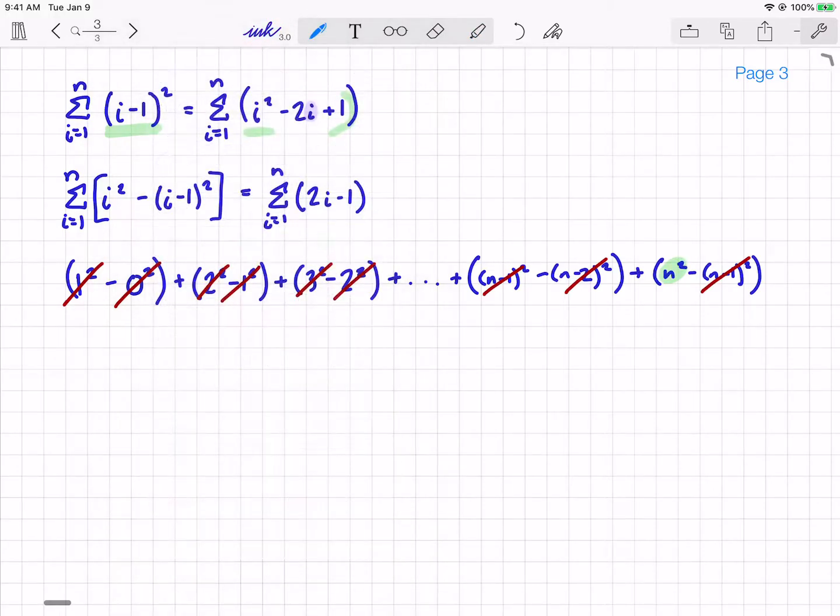So the left side of this equation is just n squared. So I've got n squared equals the sum from i equals 1 to n of 2i minus 1. Now I can rewrite this right side. I can split it up into two separate summations. I can do the sum of i from i equals 1 to n, and I have to double that because that 2 has nothing to do with i, my index over which I'm summing, minus the sum from i equals 1 to n of 1.